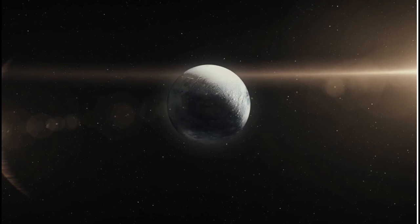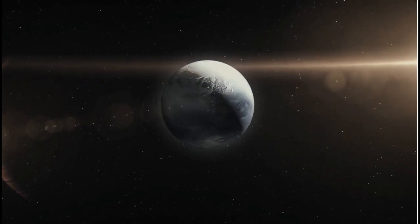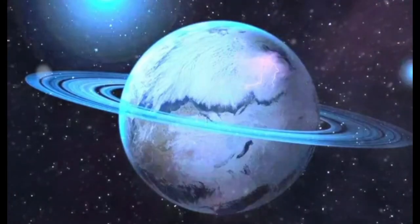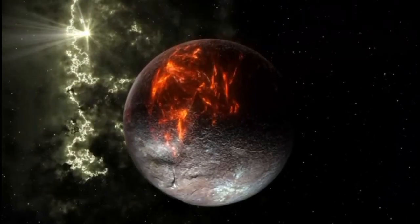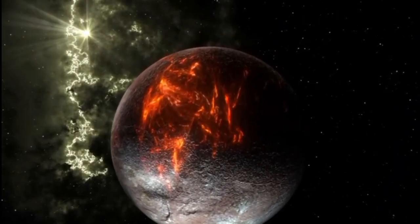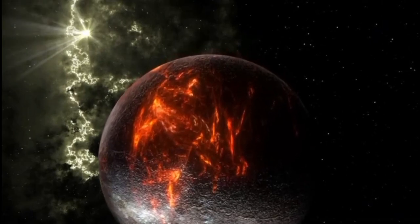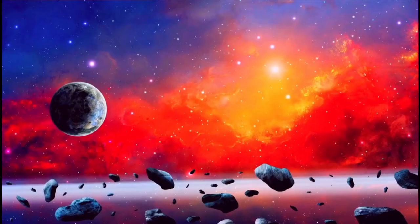Meanwhile, Neil deGrasse Tyson remained skeptical. "The solar system is an intricate but stable machine," he countered. "Pluto and Neptune's orbital resonance has been in place for millions of years. A passing object would have to be incredibly well positioned to cause meaningful disruption."